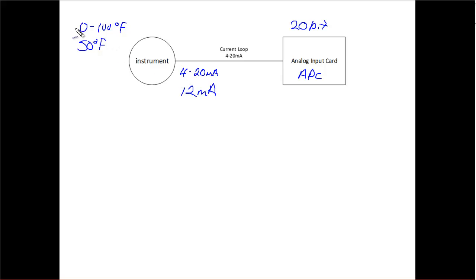Because 4 would be 0 degrees, 20 would be 100. So 12 milliamps is going to be 50. 12 milliamps is going to go into this analog card which is then going to convert it. And I know at 20 bits that I get a resolution. I'm going to be between 0 and 1,048,576.